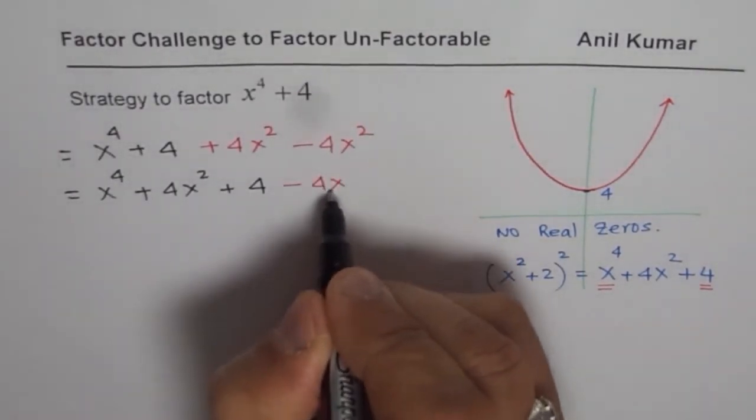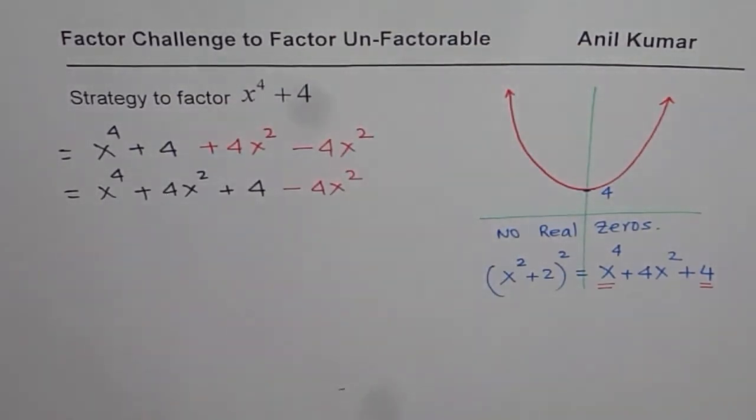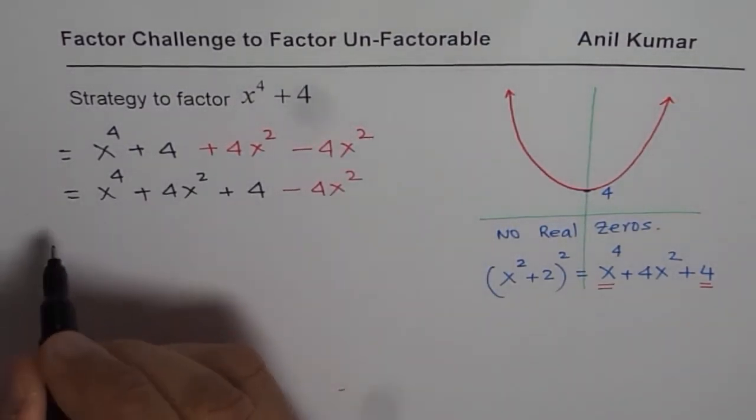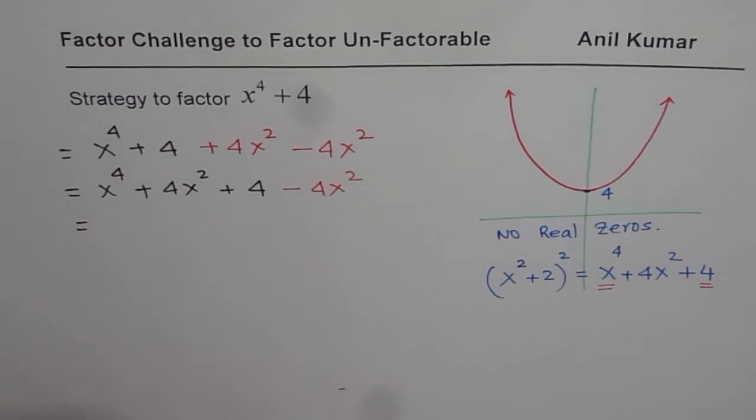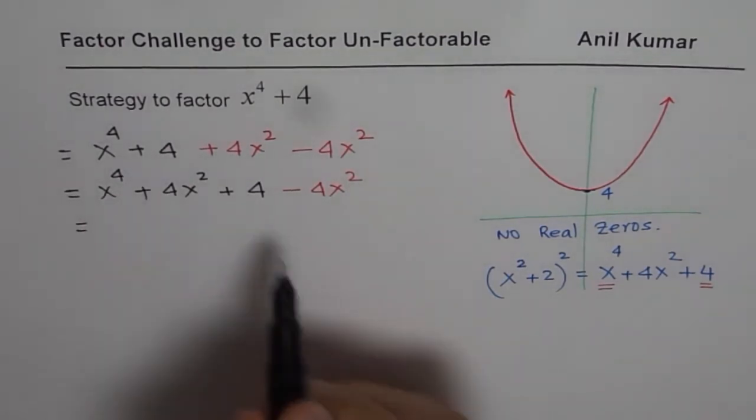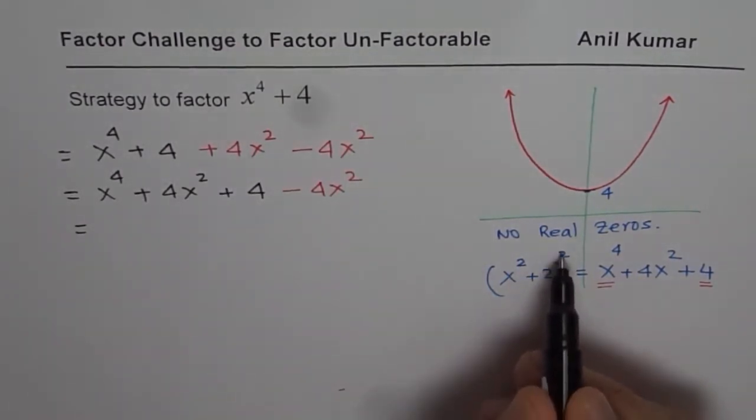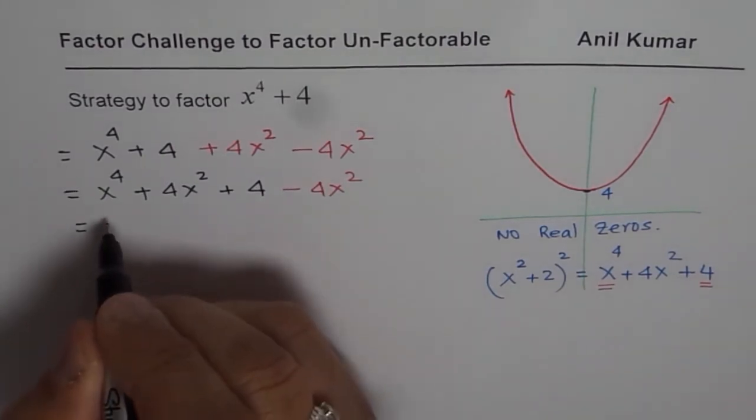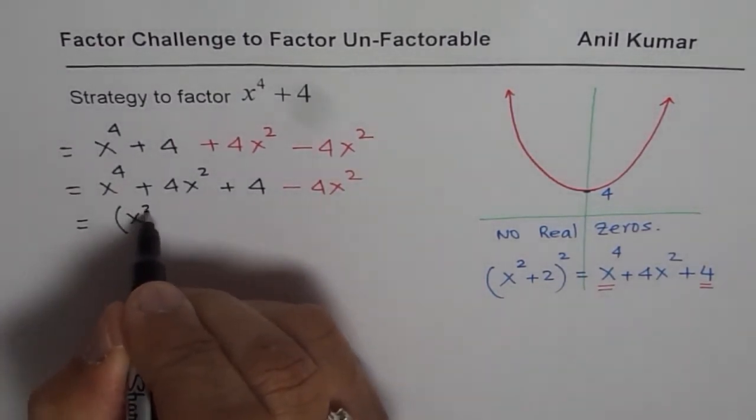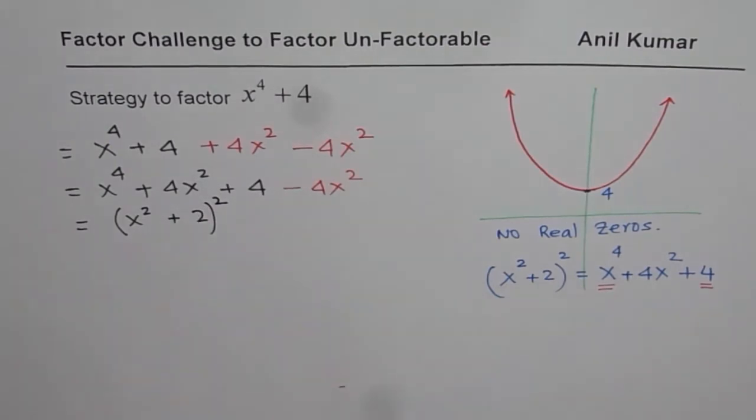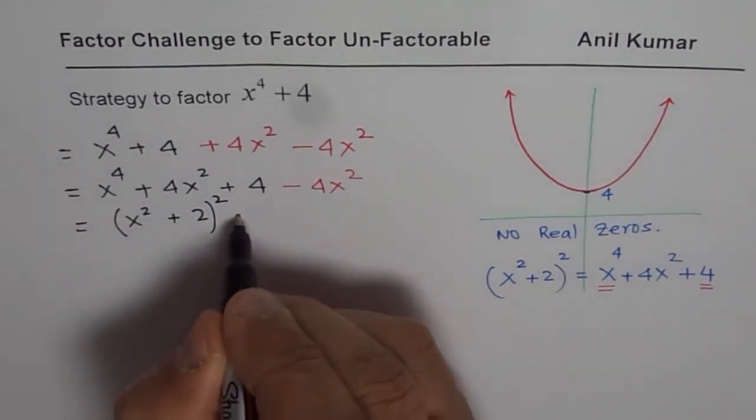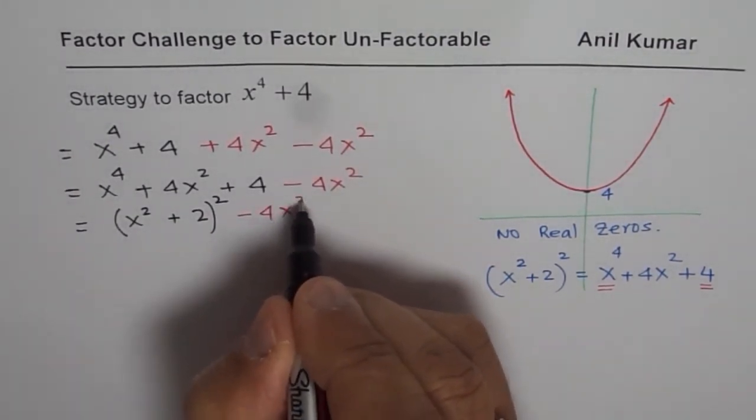Then you can clearly see that the first three terms can be factored as a perfect square and we can write them as x square plus 2 whole square. So we will write this as x square plus 2 whole square and we already have that minus 4x square with us.